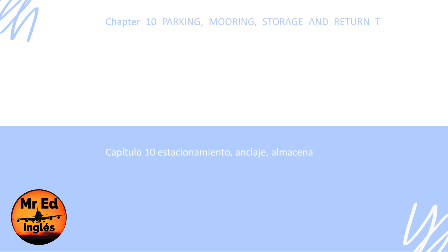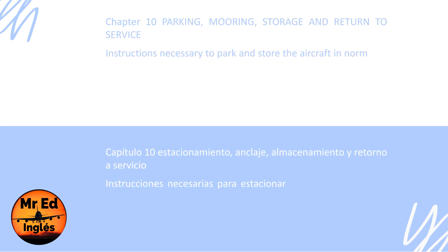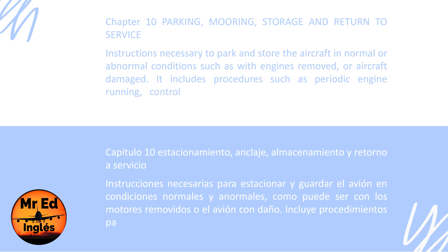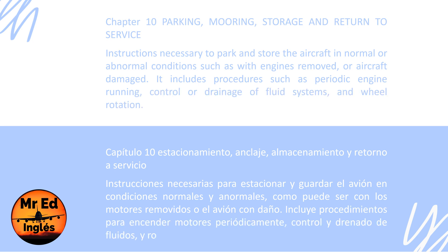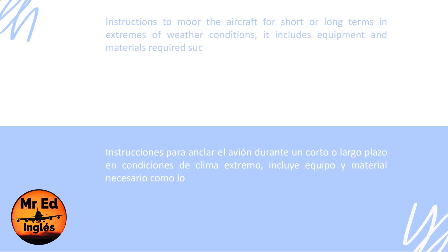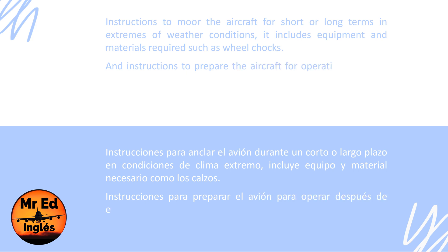Chapter 10: Parking, mooring, storage, and return to service. Instructions necessary to park and store the aircraft in normal or abnormal conditions, such as with engines removed or aircraft damaged. It includes procedures such as periodic engine running, control or drainage of fluid systems, and wheel rotation. Instructions to moor the aircraft for short or long turns in extremes of weather conditions, including equipment and materials required such as wheel chocks, and instructions to prepare the aircraft for operation following mooring, parking, or storage.